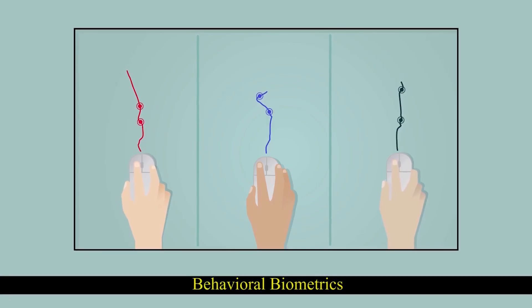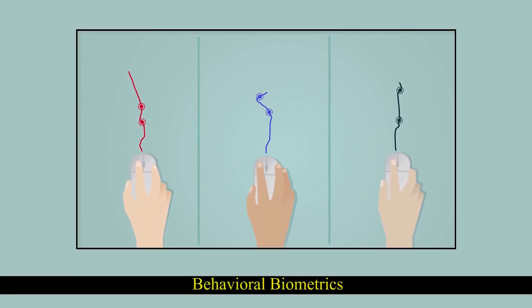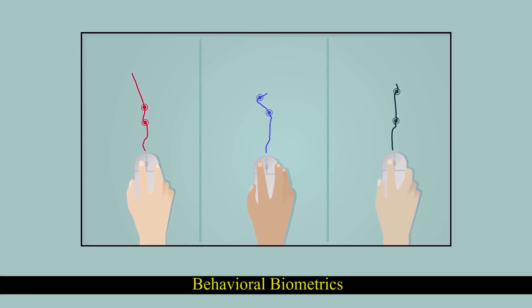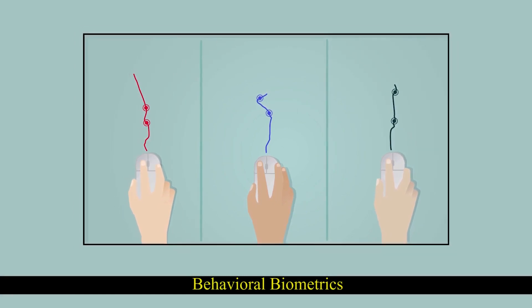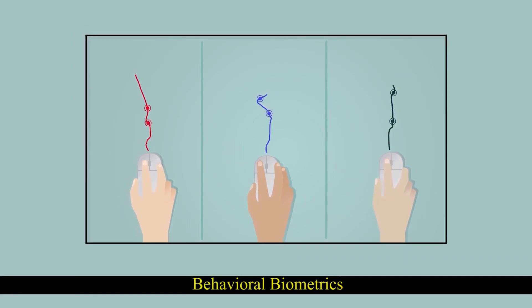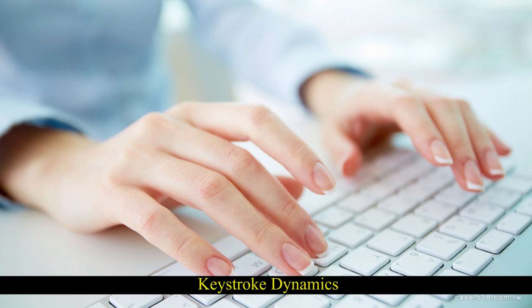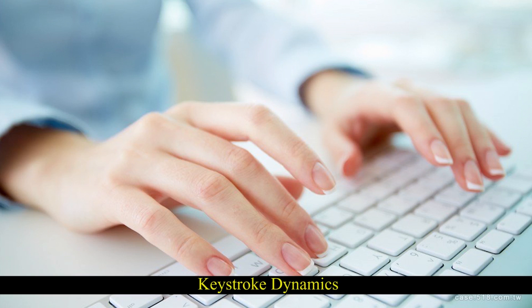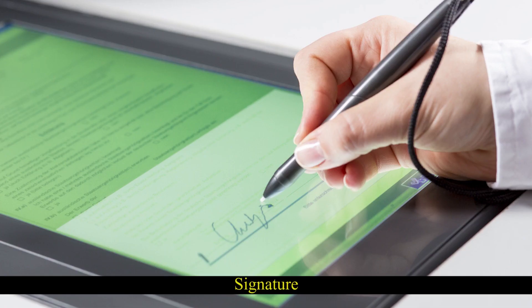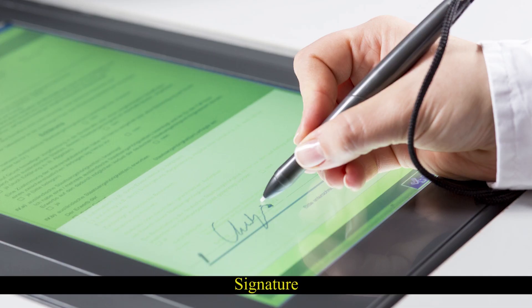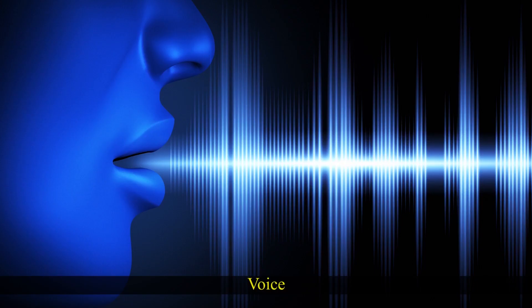Behavioral biometrics shows how the person is using the body for authentication. Examples are keystroke dynamics, mouse dynamics, signature, gait, and voice. These are all some of the behavioral biometrics.